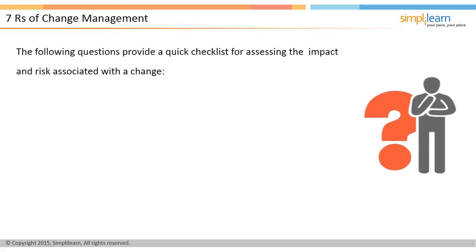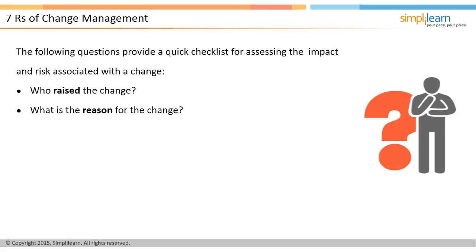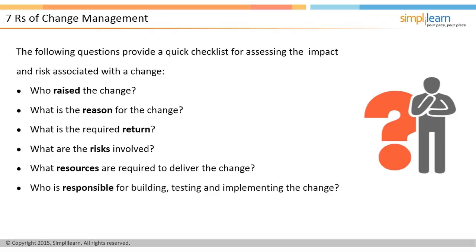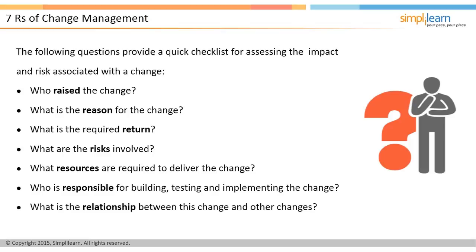The Seven R's of change management are a set of seven questions forming a quick checklist to assess the impact and risk-to-benefit ratio of a change: Who raised the change? What is the reason for the change? What is the required return? What are the risks involved? What resources are required to deliver the change? Who is responsible for building, testing, and implementing the change? And what is the relationship between this change and other changes?